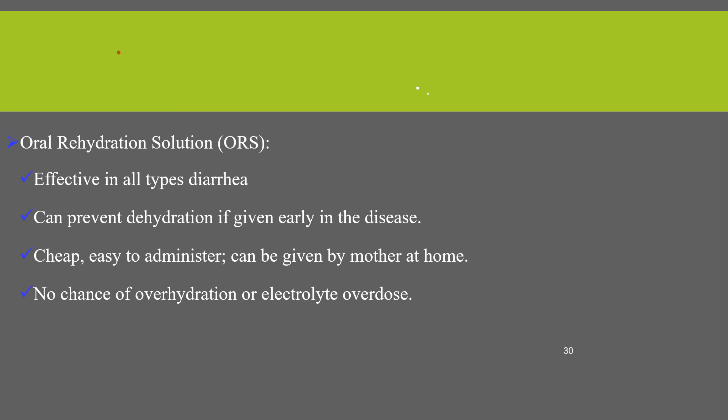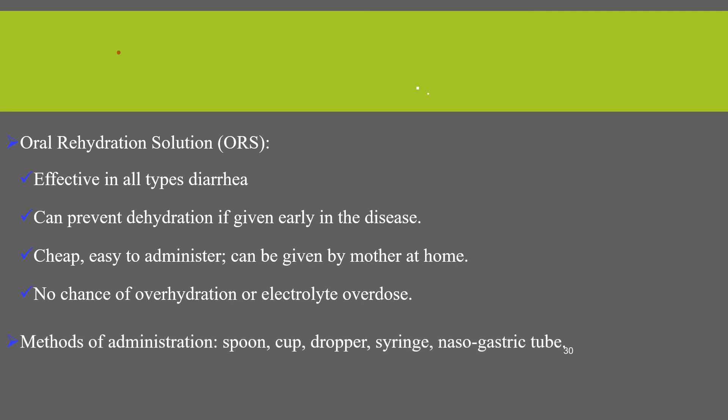ORS is effective in all types of diarrhea, can prevent dehydration if given early in the disease, and is cheap and easy to administer — it can be given by a mother at home with no risk of overdose. Methods of administration include through a spoon, cup, syringe, or nasogastric tube.